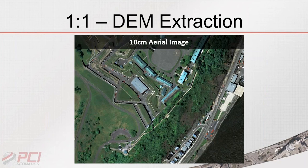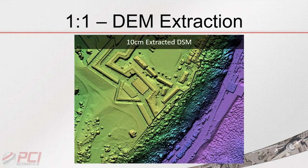Improvements to our technology also include the ability to manage more challenging environments. Here we have an area of low contrast — a mountainous region of Greenland where the ground is completely covered by snow, resulting in very low contrast. Despite this, we have a perfectly extracted DSM. DSM extraction over low-contrast areas can be a difficult task, but Geomatica 2016 handles it well.